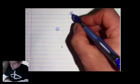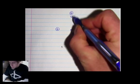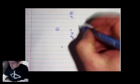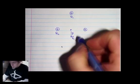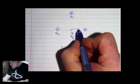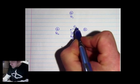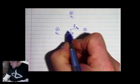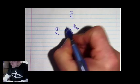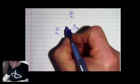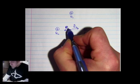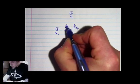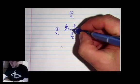I'm going to have a field due to this charge, which I'll call q1, which will point downwards, a field from q2 pointing away from q2, and a field due to q3 pointing away from q3. So I'll have three fields acting at this point p.